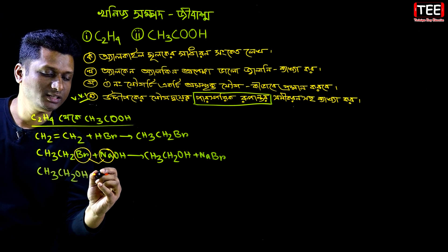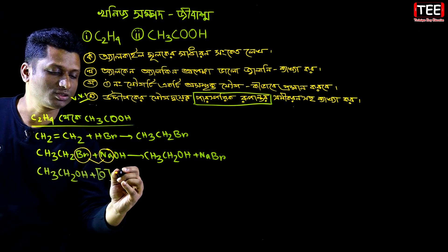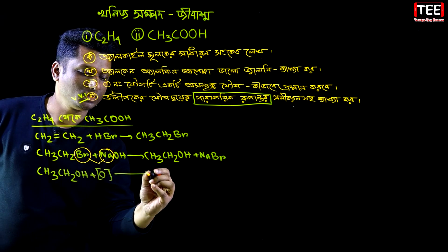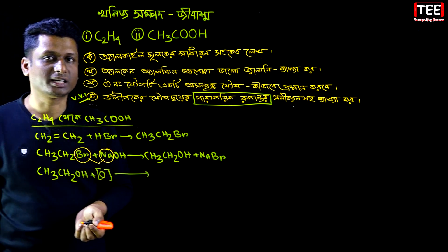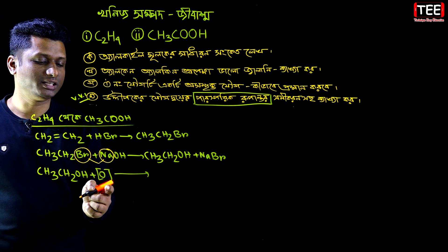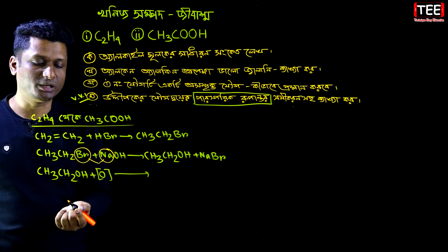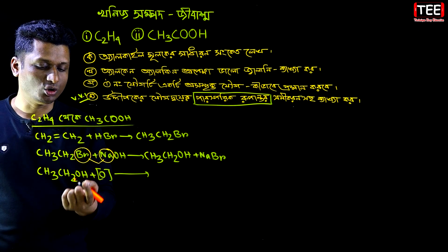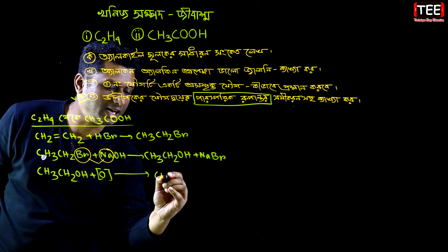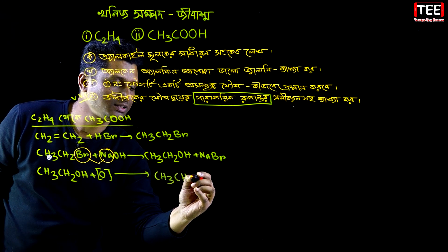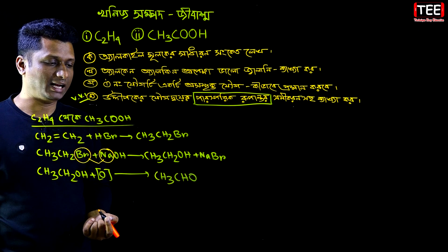CH₃CH₂OH reacts with oxidizing oxygen. This is the third stage, which involves controlled (gentle) oxidation with oxygen. With gentle oxidation, ethanol (NOL) is converted to CH₃CHO (ethanal/acetaldehyde).